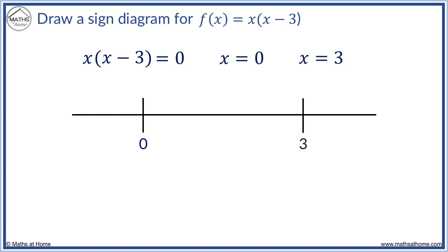Now we label the signs in each region. For values of x less than 0, we substitute a value less than 0 into x brackets x minus 3. We will substitute x equals minus 1. X brackets x minus 3 becomes minus 1 brackets minus 1 minus 3 which is minus 1 minus 4 which equals 4. This is a positive result.